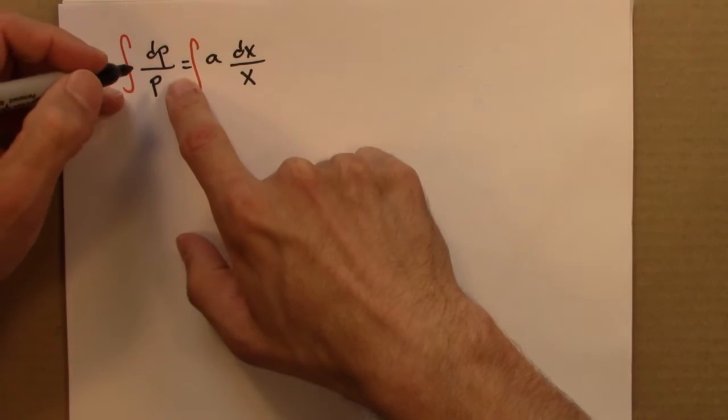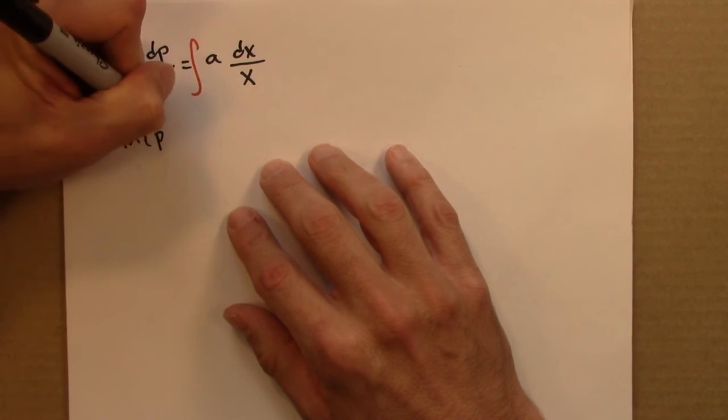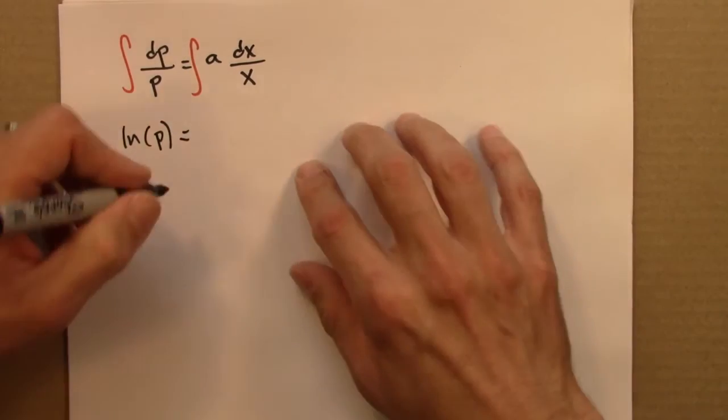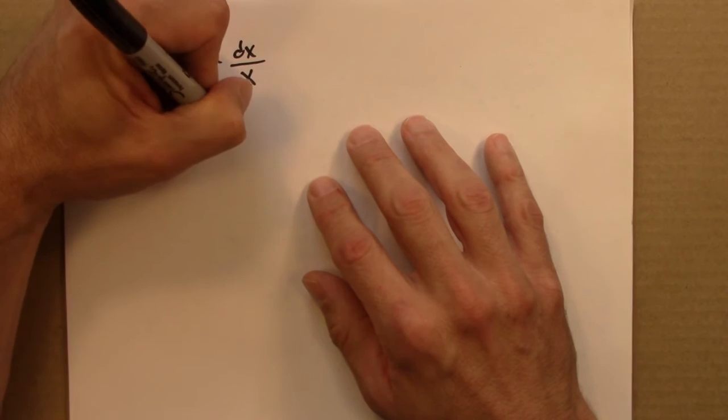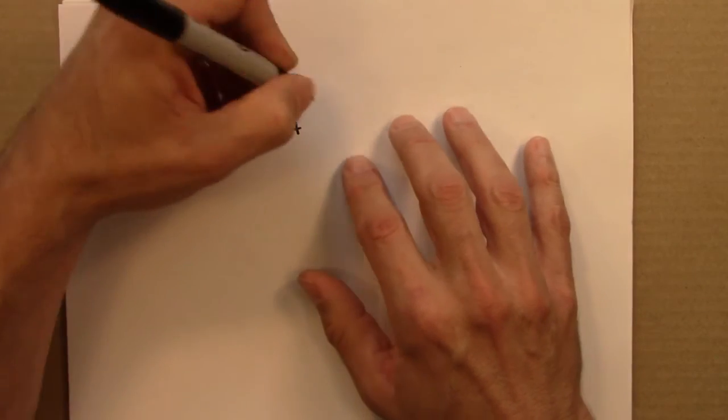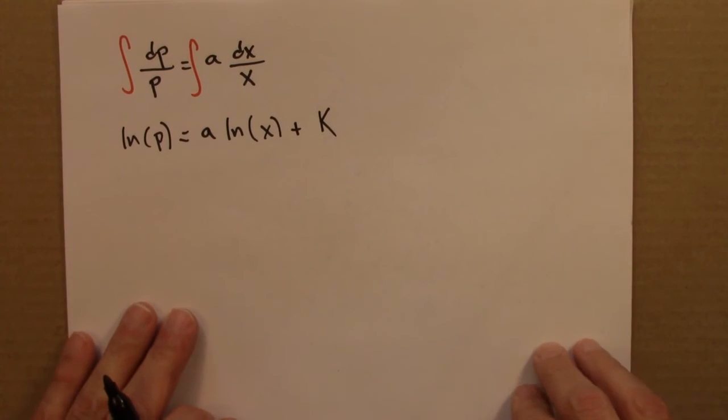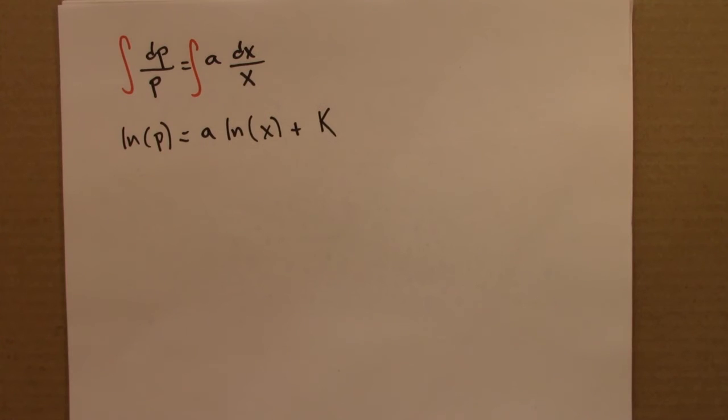Anti-derivative of 1 over P with respect to P is natural log of P. Here the anti-derivative is a natural log of x. And I need some sort of a constant k.